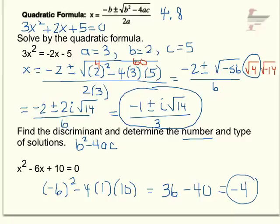The number of solutions, then I'll have two, because I got a discriminant. And the type are going to be imaginary. So two imaginary. Now, if I had a positive discriminant, I'd have two real solutions. And if I got zero, I'd have just one real solution.